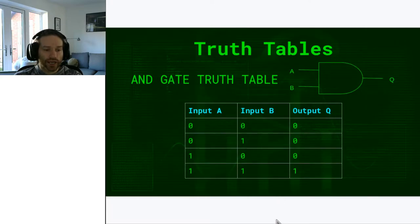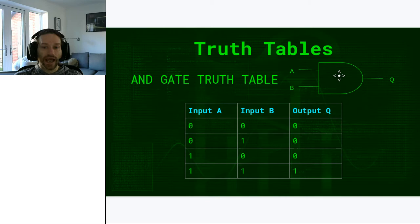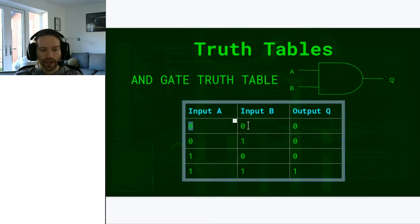A truth table is basically a list of outputs for a combination of given inputs. Here we have an AND gate. The output of an AND gate will only be 1 if both of the inputs are 1. Input A is in one column, input B is in another, and output Q is in the third. Reading along: if input A is 0 and input B is 0, because both are 0, the output is going to be 0.